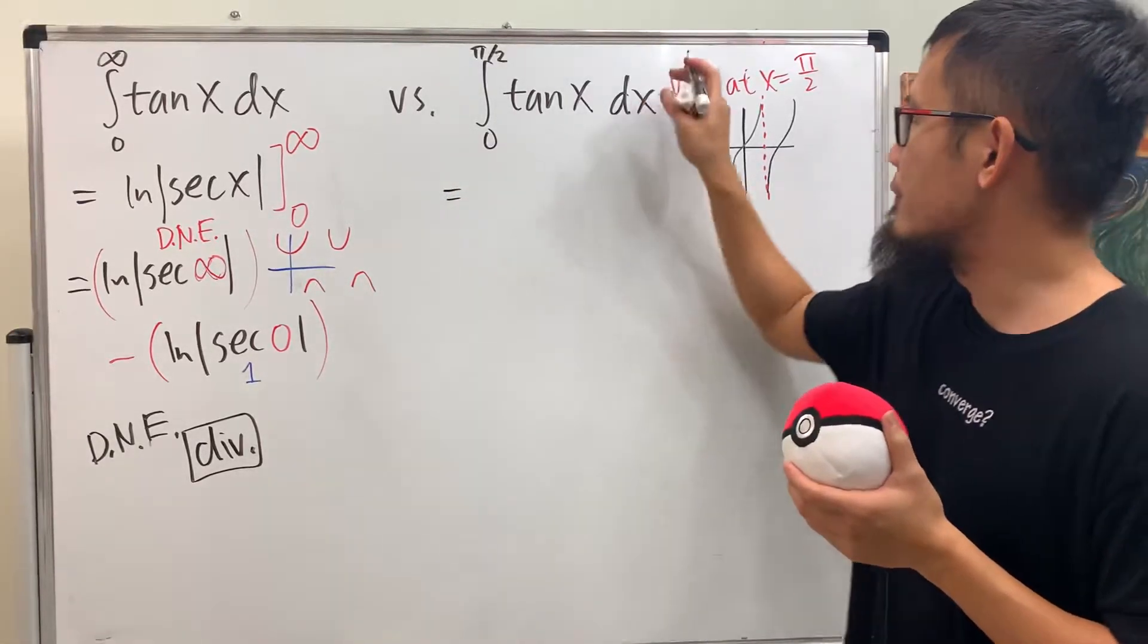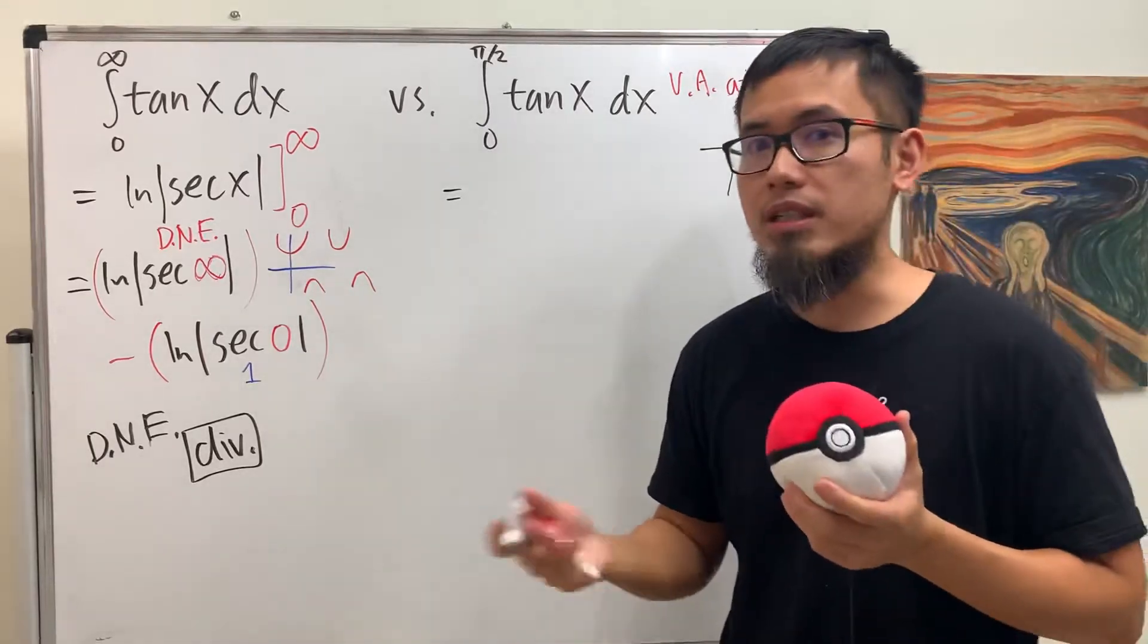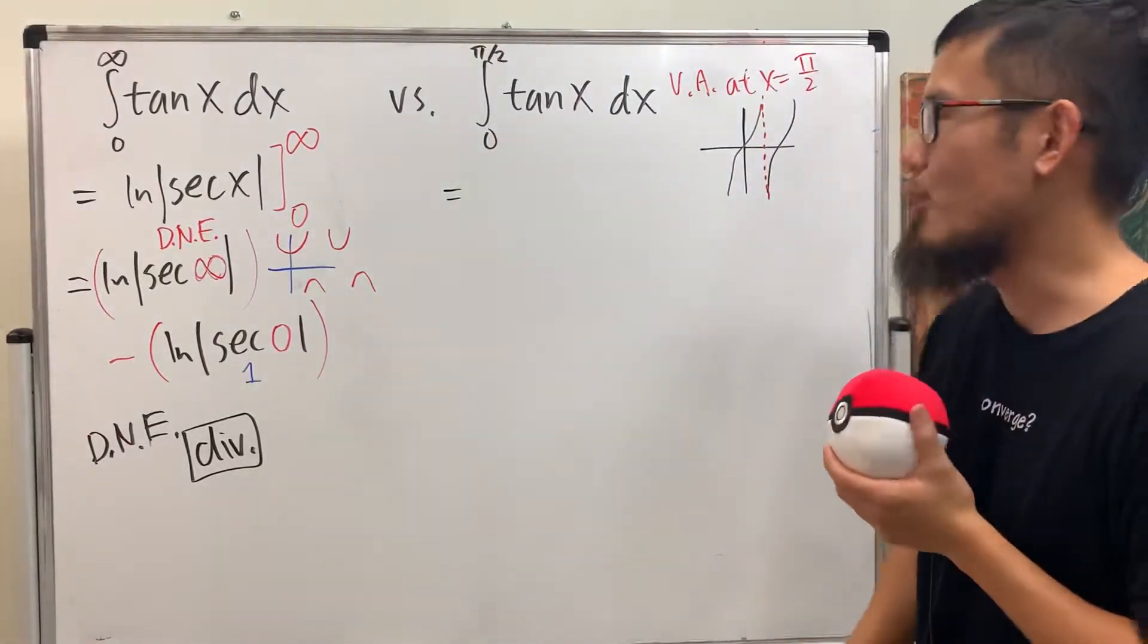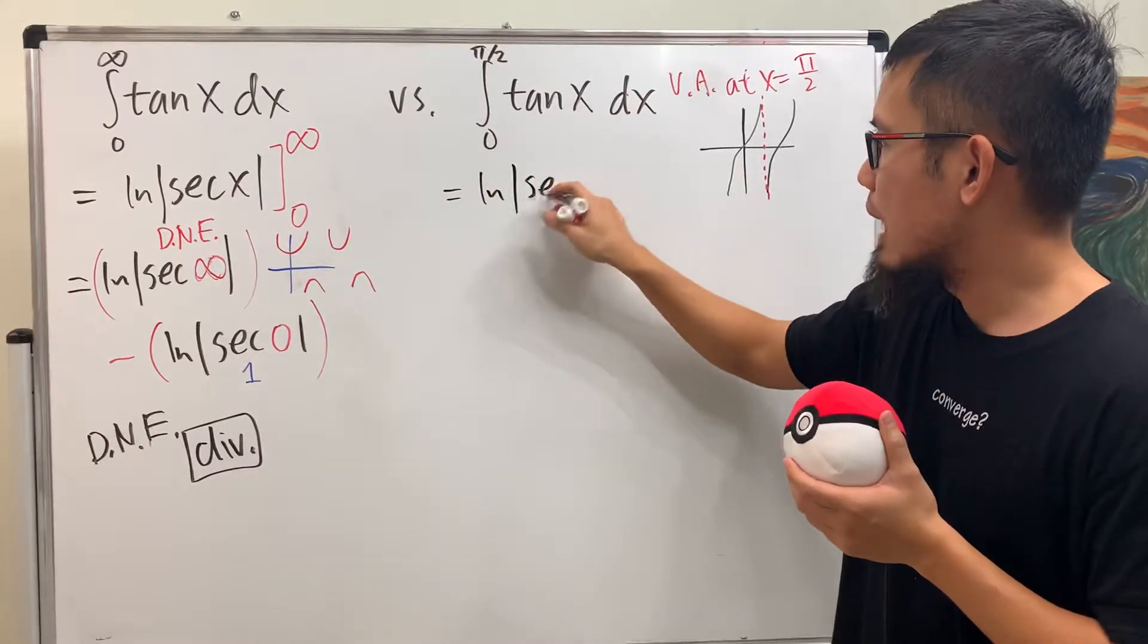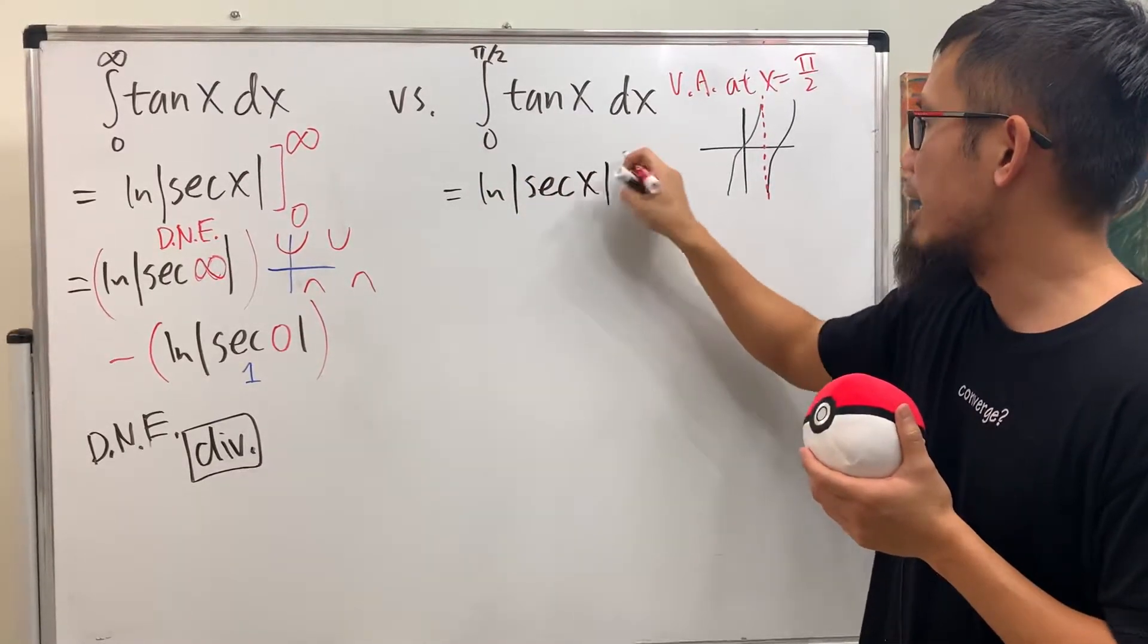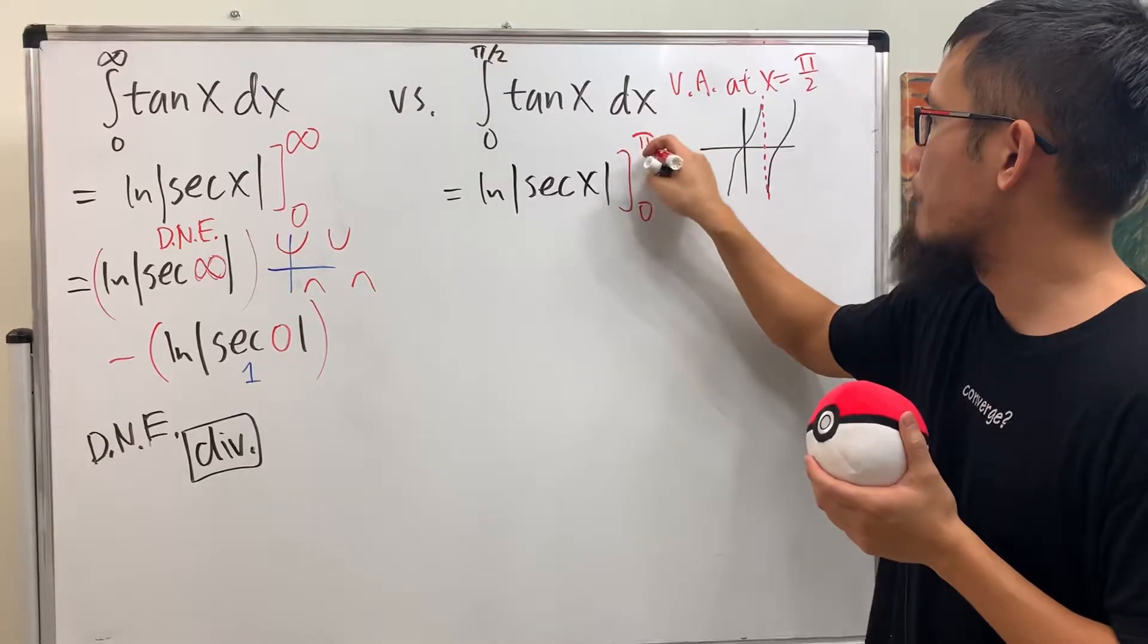Always mention the vertical asymptote when you are dealing with the type 2 situation for the improper integral. All right. For this, again, natural log absolute value of secant x, and then plug in 0 to π over 2.